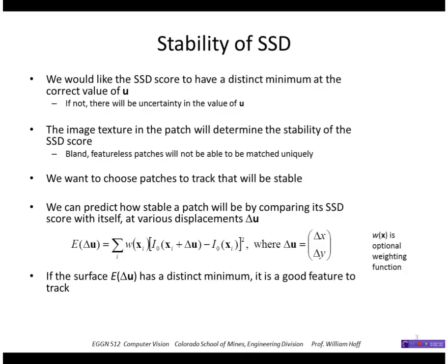If the surface, the scores that we get over this possible displacement of X and Y has a distinct minimum, then it'll be a good feature to track because we can localize it accurately.